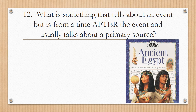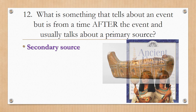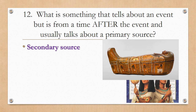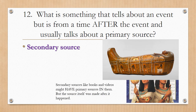Number twelve: What is something that tells about an event but is from a time after the event and usually talks about a primary source? You see one in the picture. Hopefully you said secondary source. That is an ancient Egyptian textbook — it may have a primary source or a photograph of a primary source inside of it, but the actual textbook itself is a secondary source. These secondary sources have primary sources in them, but the source itself was made after the event happened.